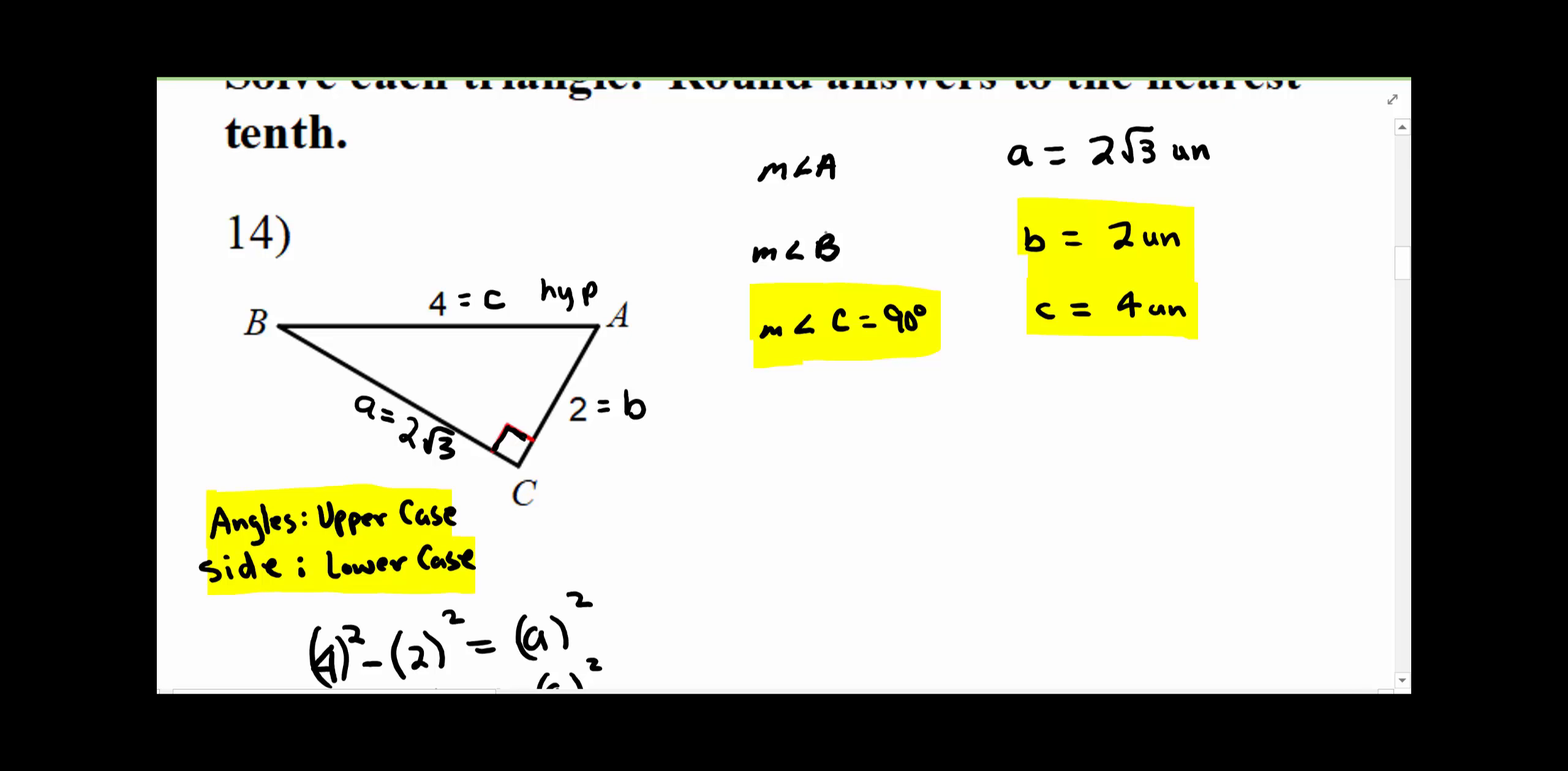So now, we have to find the measure of angle A. And remember, using the triangle sum theorem, that angle A plus angle B plus angle C all adds up to 180 degrees. We know this is 90. So as soon as we find one of these others...